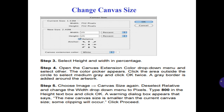Step number 3: select height and width in percentage. Step number 4: open the canvas extension color drop-down menu and select Other. The color picker appears. Click the area outside the circle to select medium gray and click OK twice. A gray border is added around the artwork.